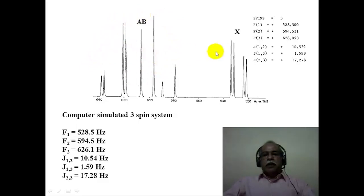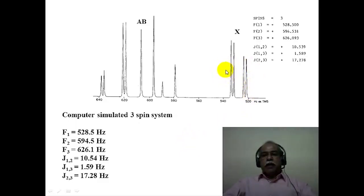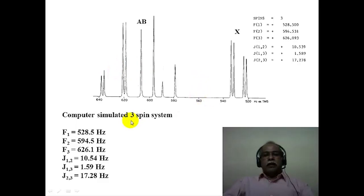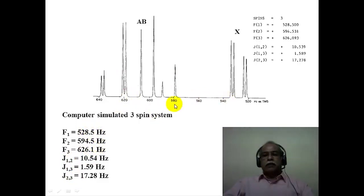The AB part of the spin system is shown separately and the X part is also shown separately. These are typically the mono-substituted olefinic hydrogens, where you have AB and an X kind of a system. The X part is split by J_{AX} and J_{BX}, so you can extract two coupling constant values from this spectrum. The line intensities are not as expected for a simple doublet of doublets. The AB pattern here is further split into a doublet, but the intensities are unusually different from what one would expect. The frequency values and the corresponding J values used for computation are given.